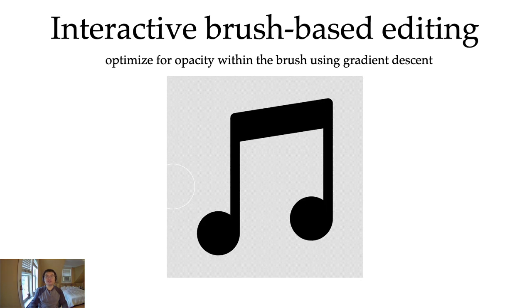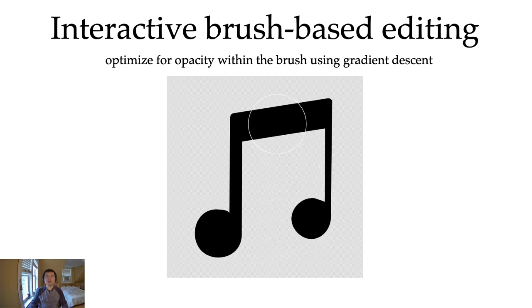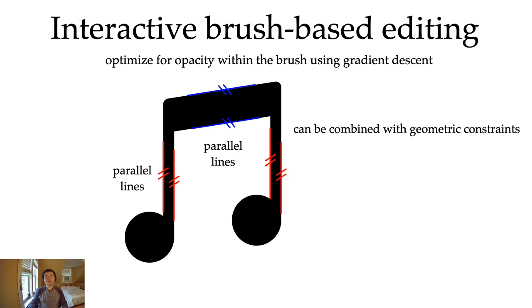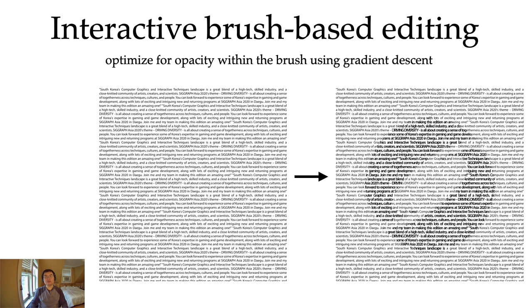One of the first things we build using our differentiable rasterizer is an interactive brush-based editor. Given the vector graphics and the brush, we do gradient descent to increase or decrease the opacity within the brush. This allows us to sculpt our vector graphics to a desired shape. We can also combine this editor with geometric constraints, like saying we want some of the lines to be parallel, etc. We can solve these constraints using standard optimization tools like projected gradient descent or Lagrange multipliers. As a fancier example, we can also use a cigarette-shaped brush for editing.